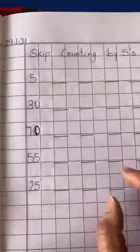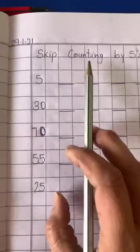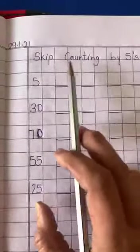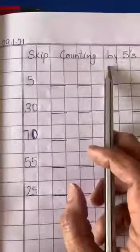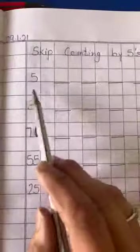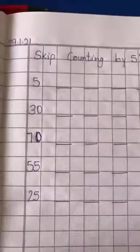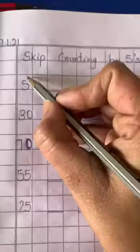Let's fill in the blanks by skip counting by fives. Let's start from the fives. Start from 5.